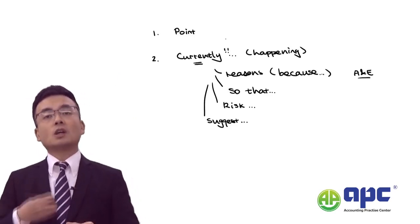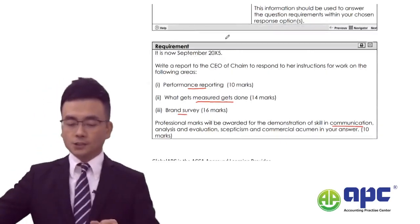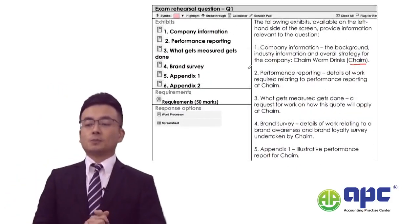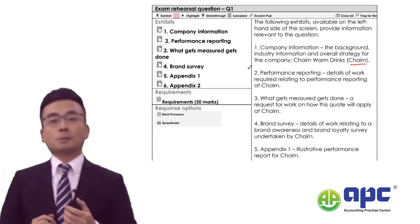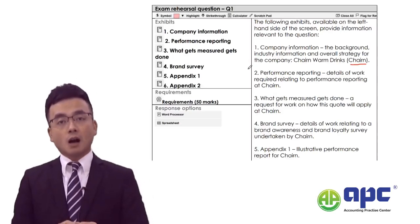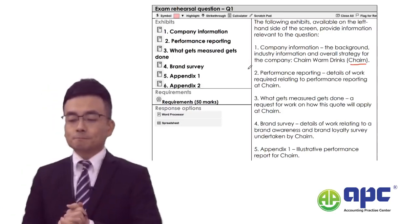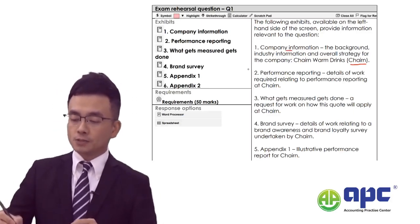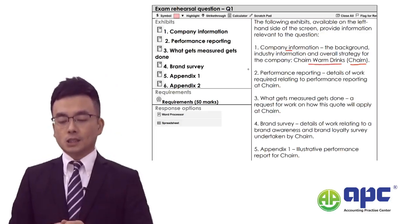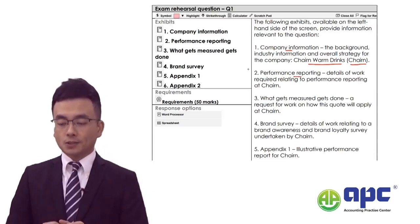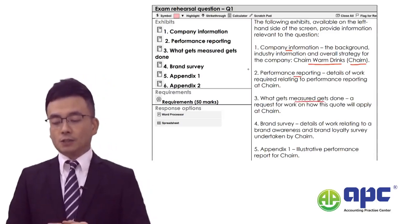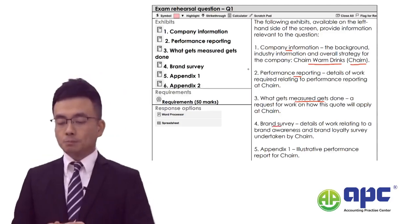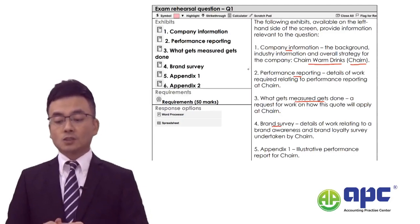We are given these requirements, which seem quite general but are tailored to this particular case. You have to change your mindset — you are not a student any longer, but a consultant. We are given the following exhibit on the left-hand side about the company's background information: it's called Chain One Drinks. We have the performance report, 'what gets measured gets done', a request for work on how these quotes apply at the company, and a brand survey about brand awareness.